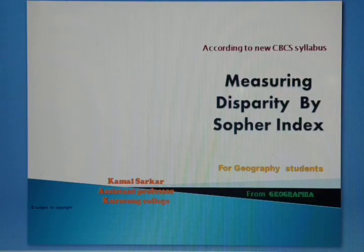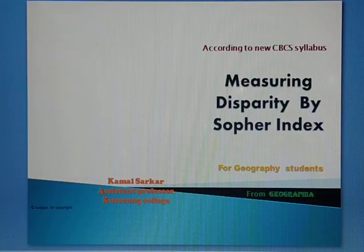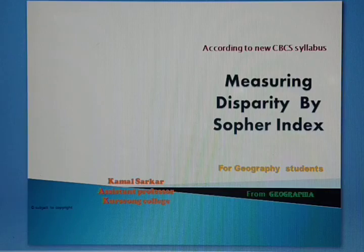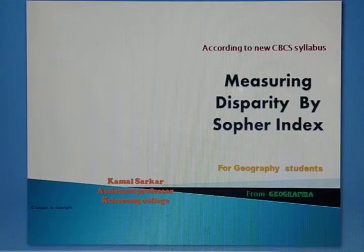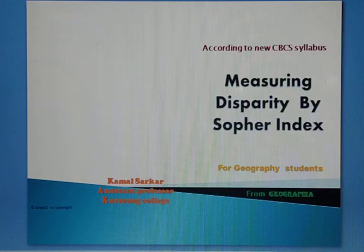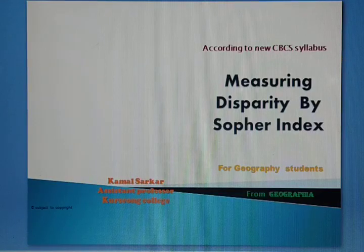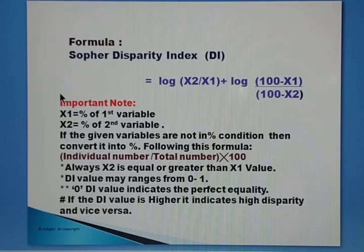Hello dear friends, students and viewers. Today in this video I am showing you how to measure the disparity by Sopher's Index. Before starting this lesson, we should know what disparity means. Disparity means a great difference between any two variables and it helps to identify the relative disparity of a region. It can be identified from variables like literacy, working population, distribution of male and female persons, and socio-economic variables like health facilities and drinking water.